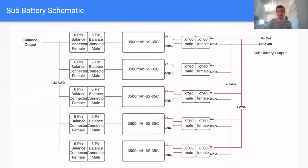Each module contains 10 batteries, which we have split into two sub-batteries. The sub-batteries contain 3500 mAh batteries, which we will connect via XT60 connectors and one AWG wire. On the left, we have connected the balance connectors of the batteries together in parallel to the balance output.